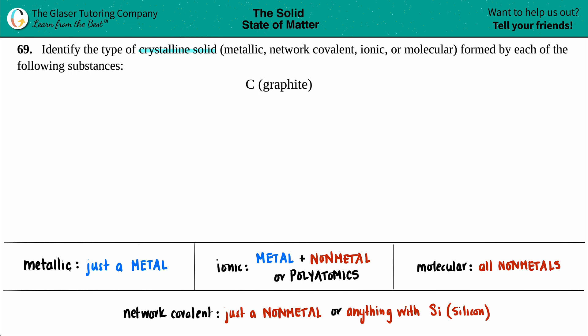Is it a metallic crystalline solid? The word metal is in the word metallic, so to be a metallic crystalline solid you have to just see a single metal. But on the periodic table, carbon is totally a non-metal. The word graphite is just showing you what type of form that carbon is, but it's a non-metal. No metals here, so it can't possibly be a metallic crystalline solid.